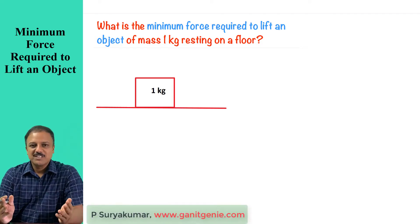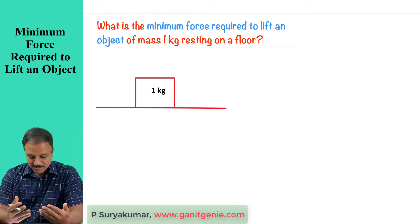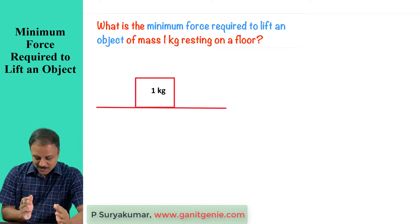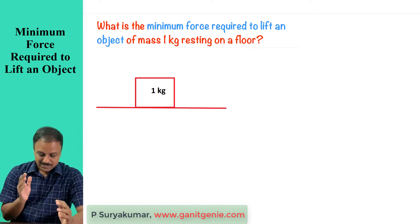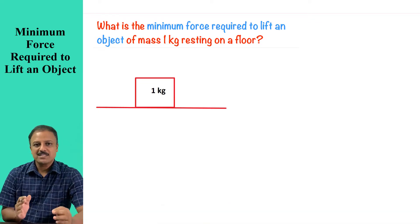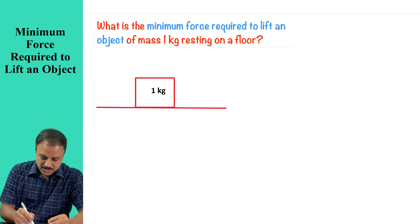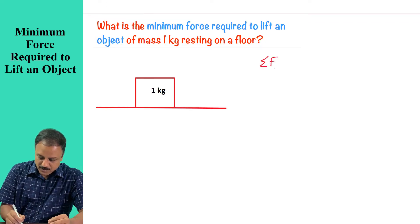What is the minimum force required to lift an object of mass 1 kilogram resting on a floor? Look at this mass — it remains at rest. When a mass remains at rest, you can conclude that the net force, that is the summation of all forces acting on it, is equal to 0.